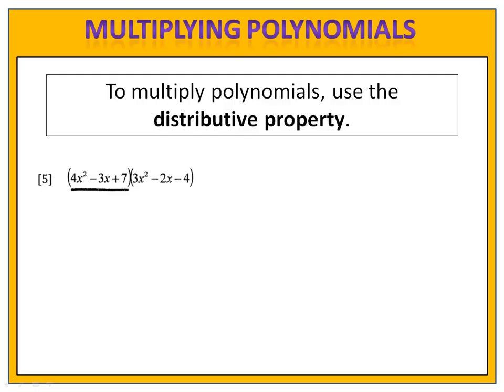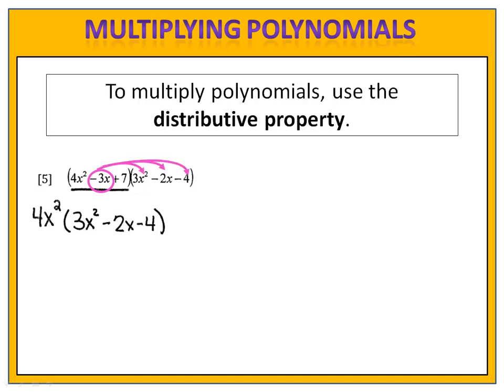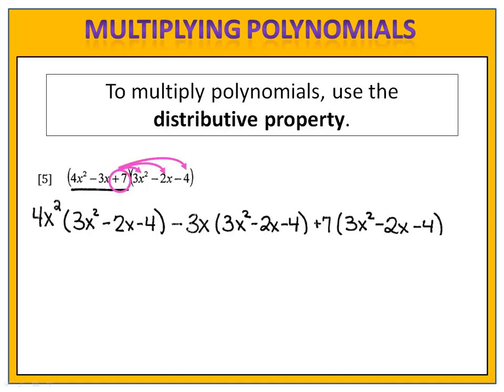In exercise 5 we're going to go one step further and multiply a trinomial by another trinomial. The process is still the same — we're going to use the distributive property. We begin by distributing the 4x squared, then we distribute the minus 3x, and finally we'll distribute the 7. Now we have an expression that we can work with.